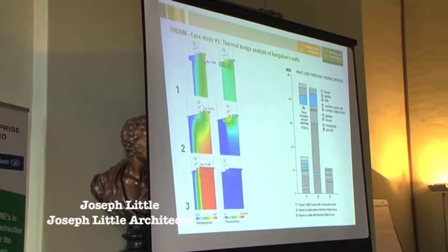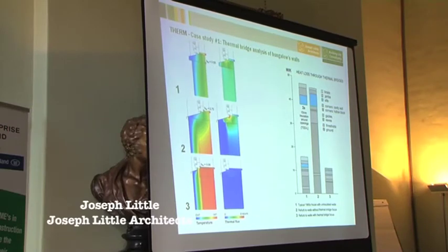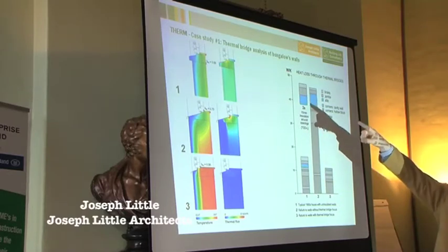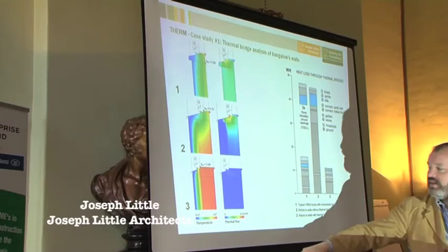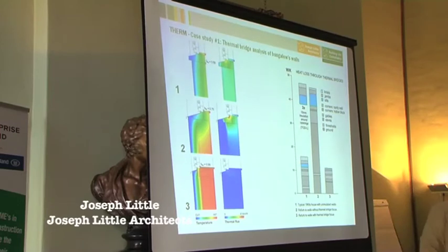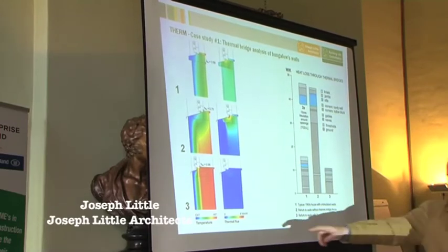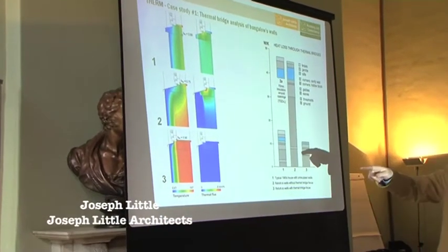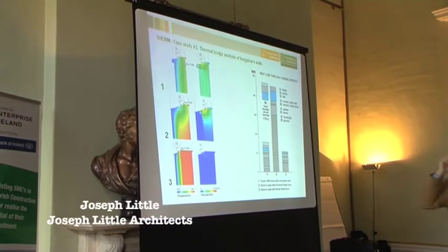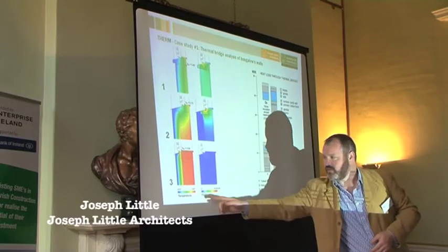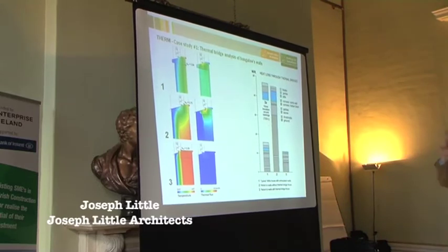Looking at the heat flux — colour representing speed of heat loss — we can see that underneath the sill, underneath the window, is clearly the weak point of any external wall insulation retrofit. There's a significant increase from around 6 watts per meter squared to about 8 watts per meter squared in the poorly detailed version. In the good version, the blue colour tells you there's a very slow and very uniform movement of energy through there. There's a clear difference between the three approaches.